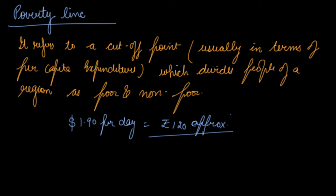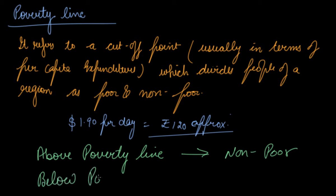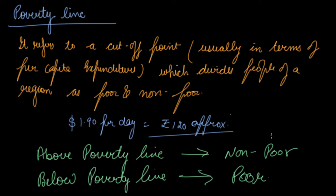People above the poverty line are non-poor. I am not saying they are rich, but they are non-poor. And below the poverty line, they are the poor section of society. This is how the poverty line helps you estimate the poor section and the non-poor section of society.